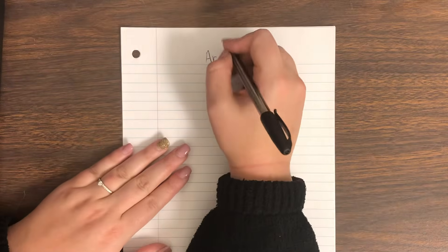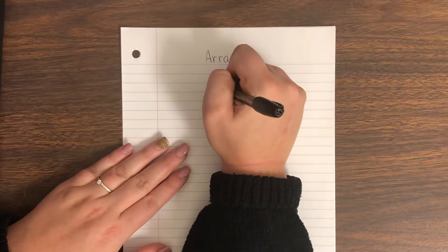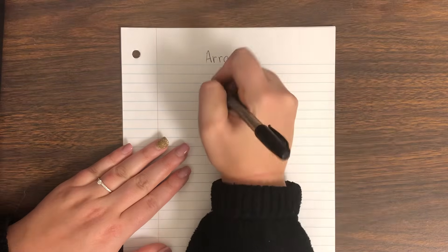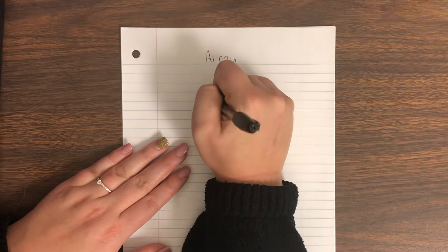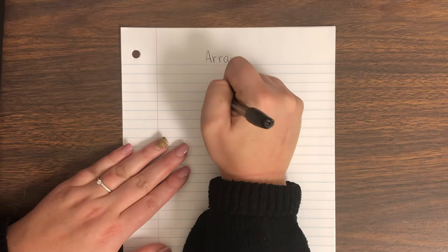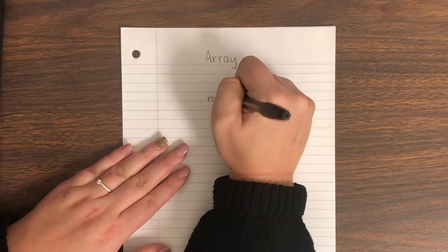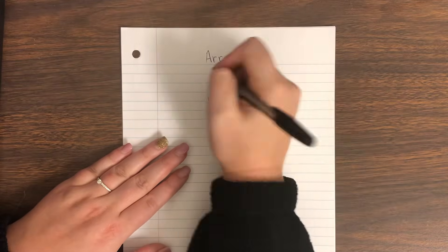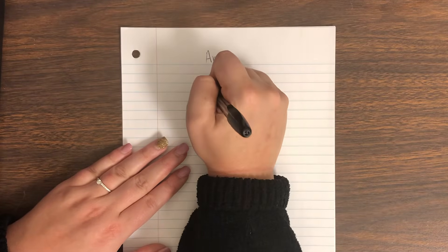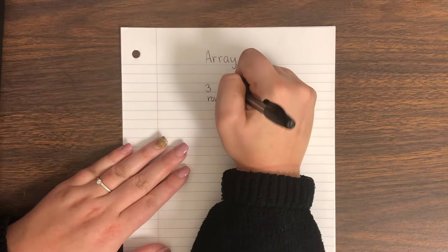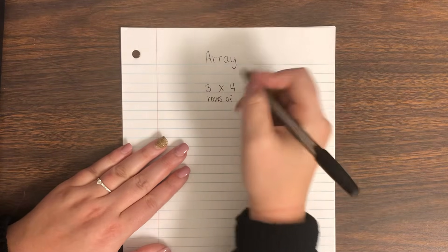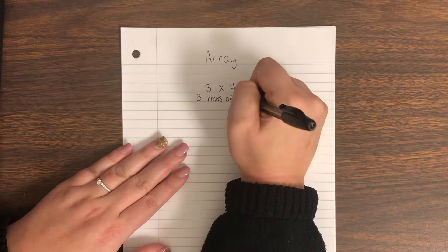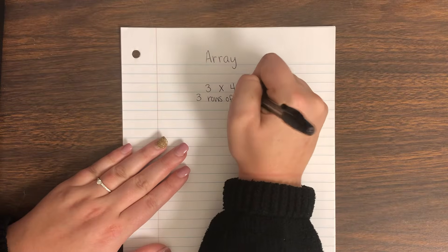So today our times sign is going to say 'rows of.' Normally it's been saying 'groups of,' but today it's going to say 'rows of.' Three times four, or three rows of four.